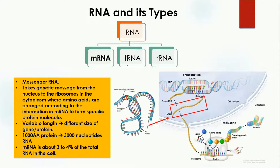There are three major types of RNA: mRNA, tRNA, and rRNA. In the case of mRNA, the 'm' stands for messenger, so mRNA is the messenger RNA. As the name indicates, it works as a messenger and carries information from one part to another. The mRNA takes the genetic message from the nucleus to the ribosomes.